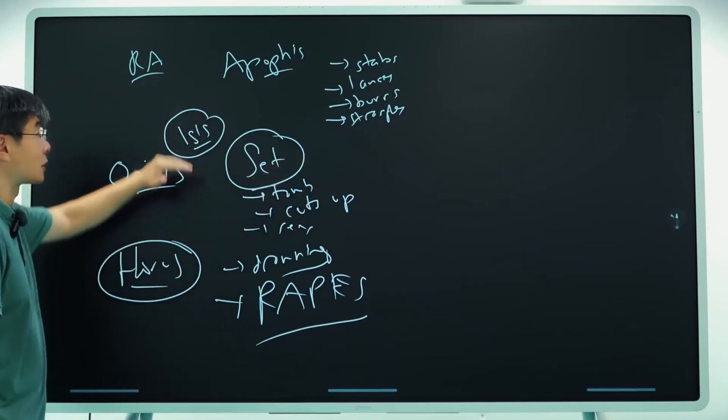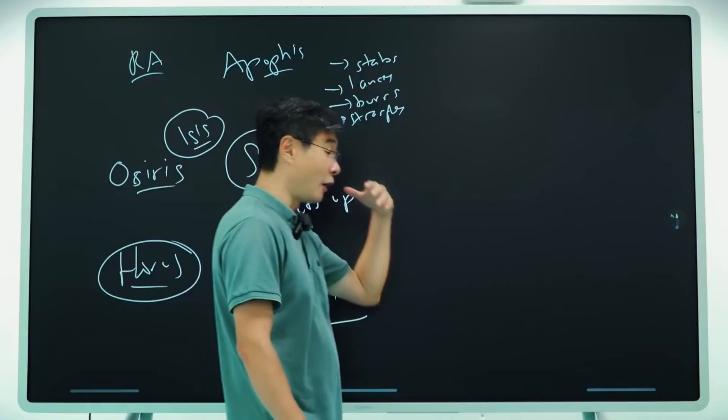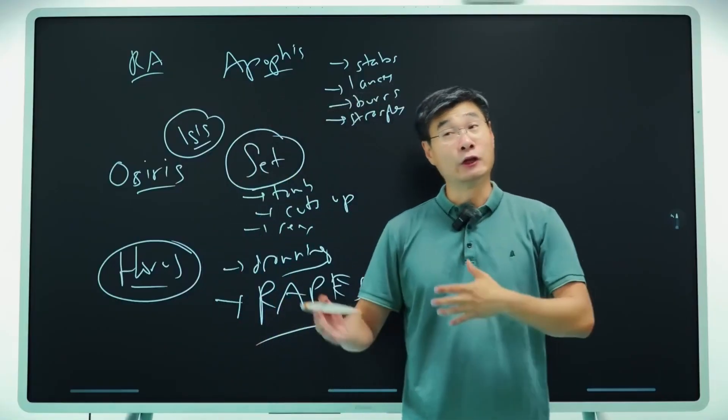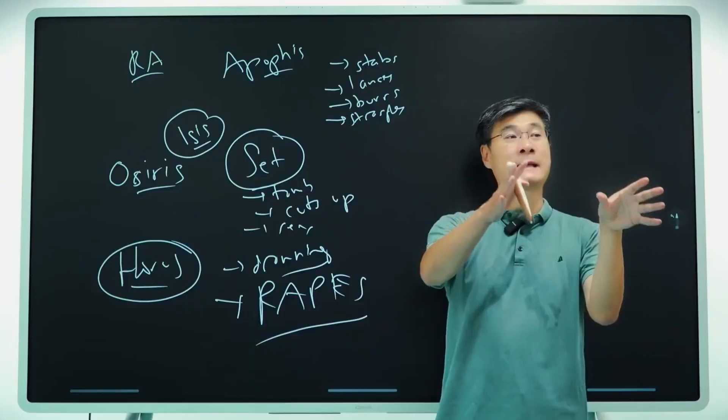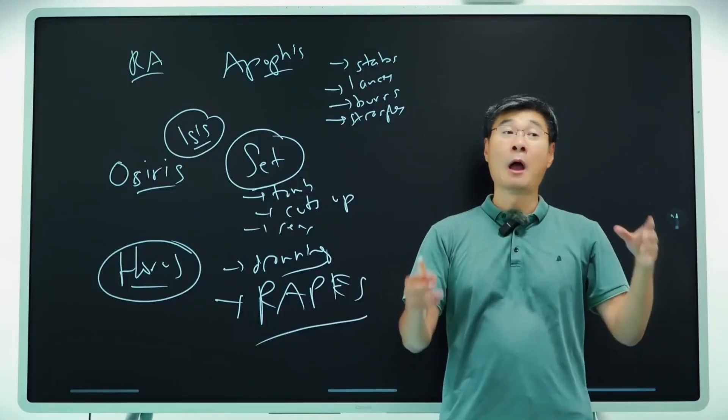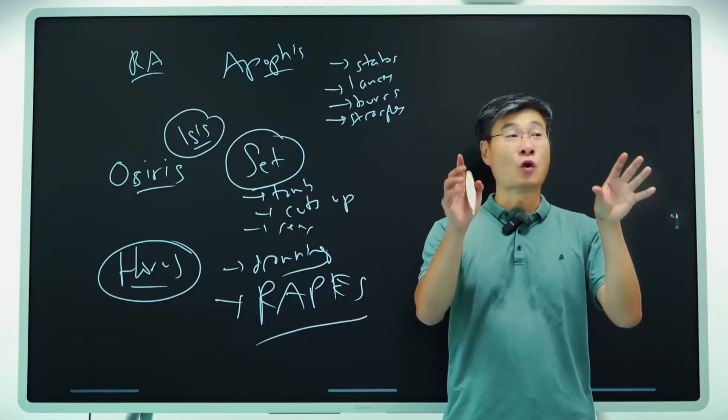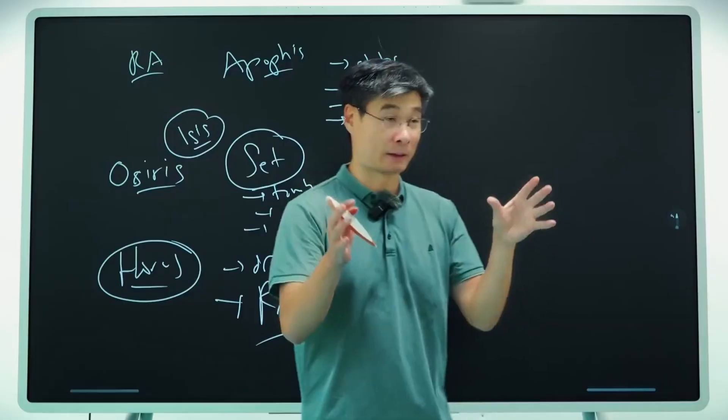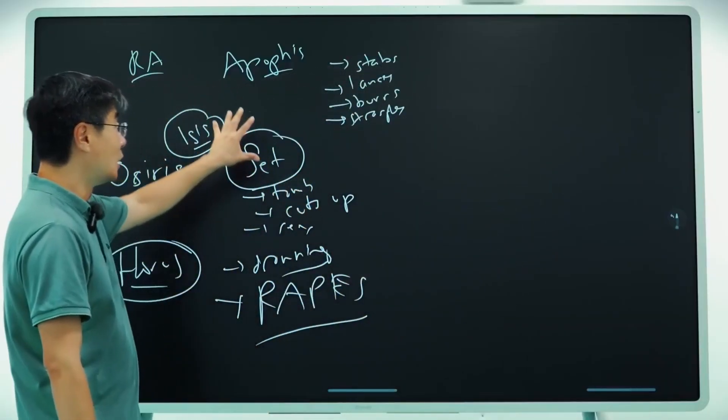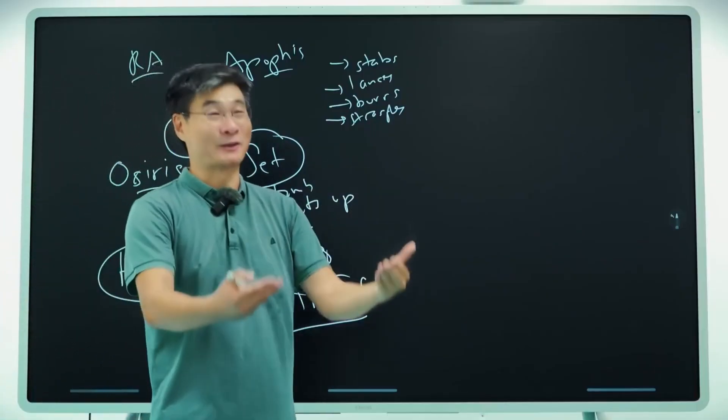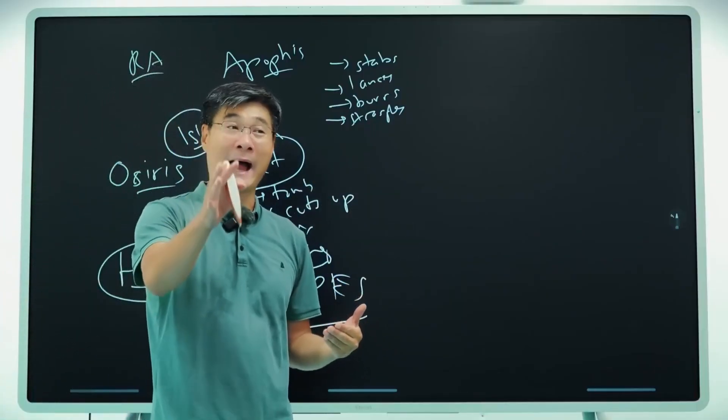So this is the main structure of Egyptian mythology. And as you can see, it's really weird. And it doesn't really make sense as a story. It's not a great story. But if you don't see it as a story, but as a script, it makes a lot more sense. It's not something to be believed. It's something to be acted out.